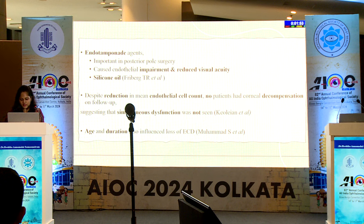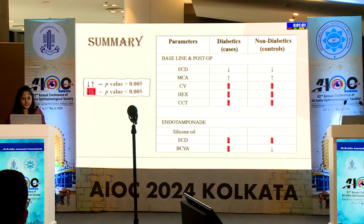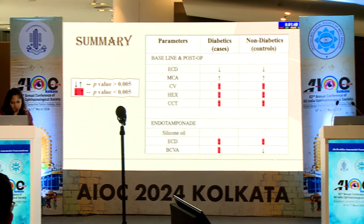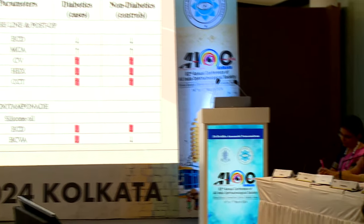Age and duration also influenced cell loss. Summary: there was a reduction in cell density and rise in cell area in both groups, which was not significant. Rise in coefficient of variation and fall in hexagonality was significant in both groups. Central corneal thickness increased in both groups from baseline to post-op. Among endotamponades, silicone oil had more cell loss in both groups, which was significant, and patients with silicone oil had poor visual outcomes.